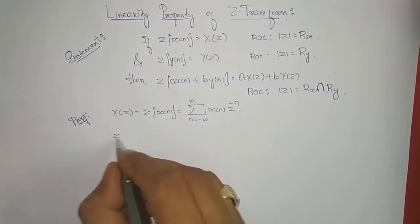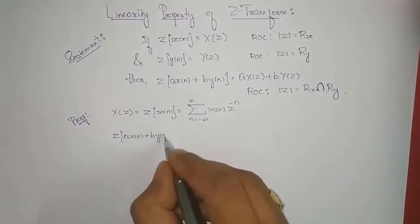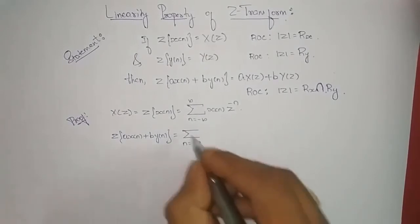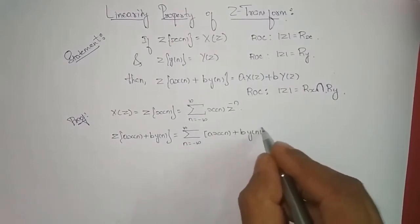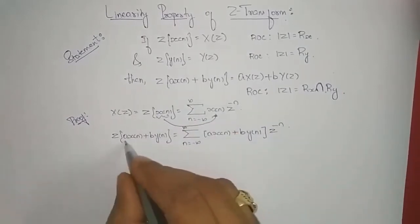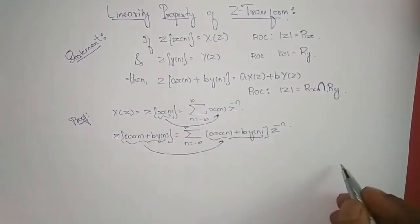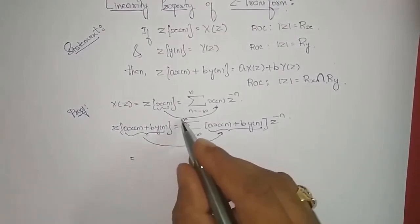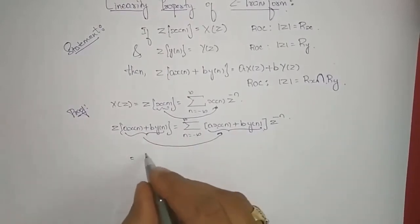So what we need to prove is: the Z-transform of a times x(n) plus b times y(n) equals the summation with n varying from minus infinity to infinity of a times x(n) plus b times y(n) times z to the power of minus n. This term as it is should come to the right-hand side, where we have kept a times x(n) plus b times y(n).